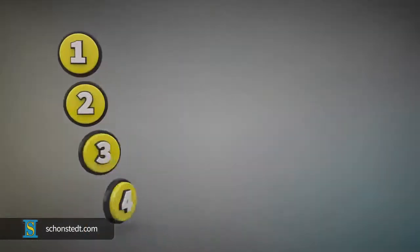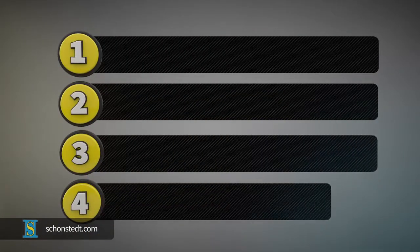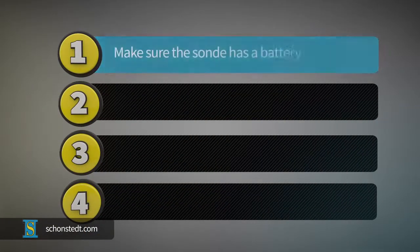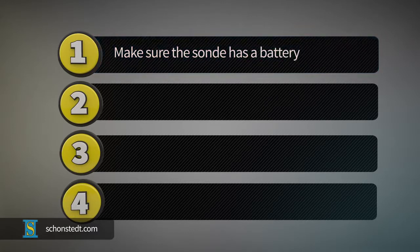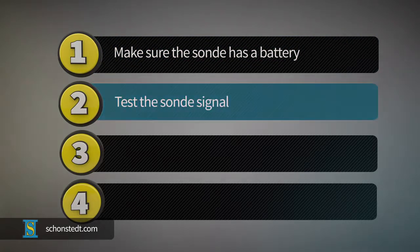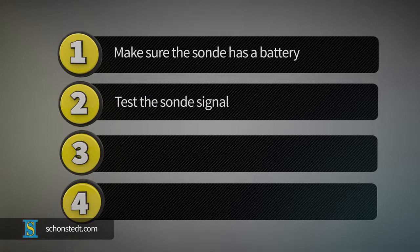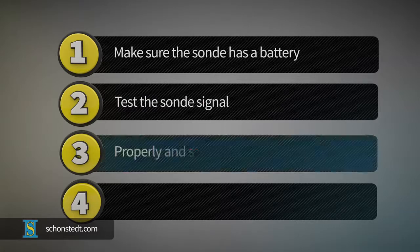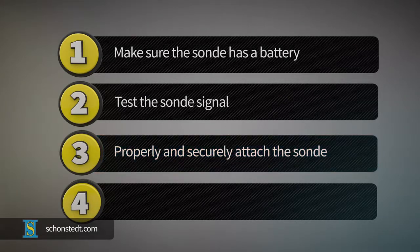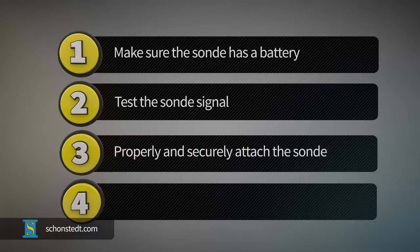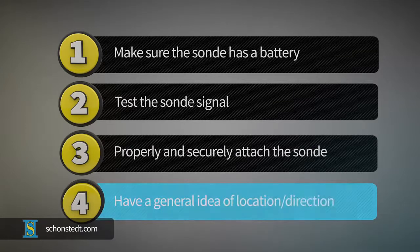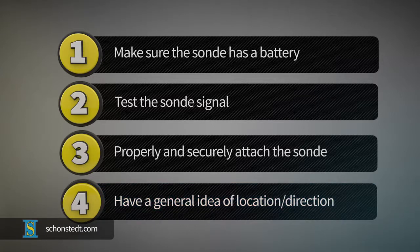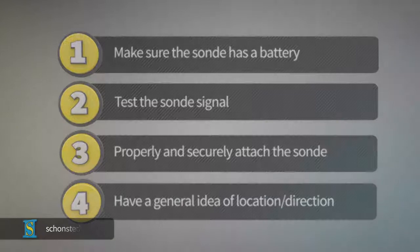In summary, before attempting to locate a sonde, always remember: 1. Make sure the sonde has a battery. 2. Test the sonde signal with your receiver before inserting it into a pipe. 3. Properly and securely attach the sonde to the snake or mechanical means to push it through the pipe. 4. Have a general idea of the location and direction in which the sonde will be moving once inserted in the pipe.